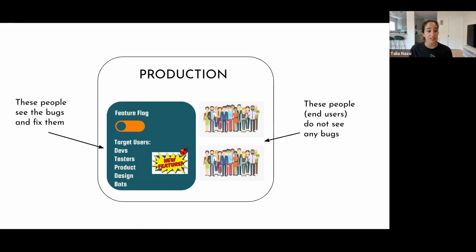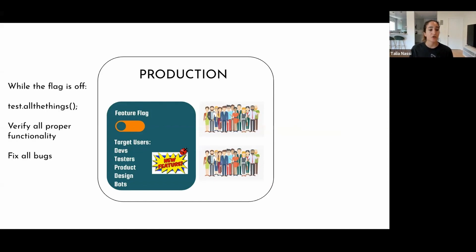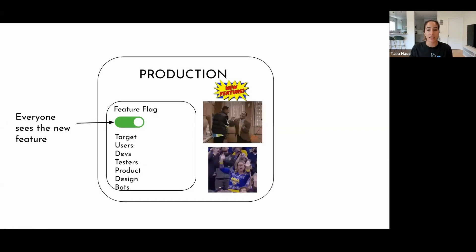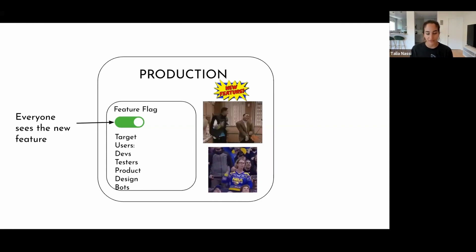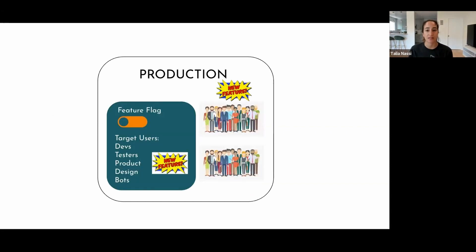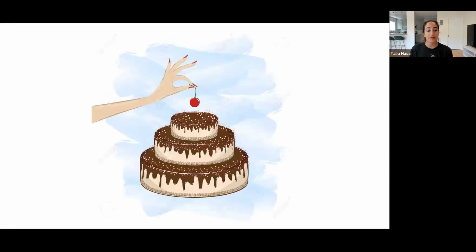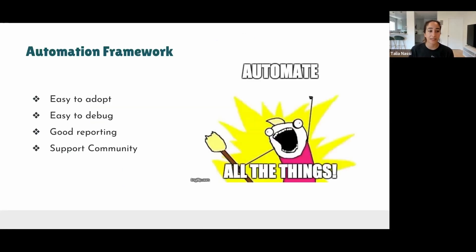If there happens to be a bug in your new feature, it has no impact on your end users because they don't have access to it. While the flag is off, you go in, test everything, verify all proper functionality, and fix all your bugs. Once you're done testing and you know your feature is working in production, you turn the feature flag on — already knowing 100% that your features are working and you haven't broken anything existing. Your users get a perfect feature. The cherry on top is that when you turn on the feature flag, there are no surprises.